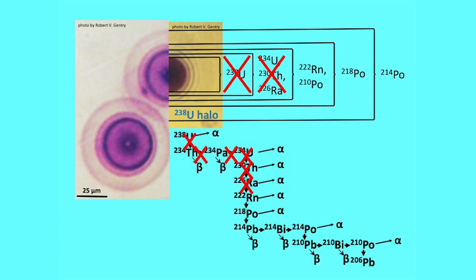We know what decayed to produce each ring, so we know whatever produced this halo didn't have uranium-238, didn't have uranium-234, thorium-230, or radium-226. Looking at that decay series, it doesn't have uranium or anything upstream — if it had thorium just underneath the uranium, it would produce the others too. That leaves us all the way down to radon-222. Since radon and polonium-210 have the same ring size, it could be halos produced by radon-222 or by polonium-218.